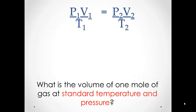Now we know the actual volume of the hydrogen in our container. Our lab is asking us to find the volume of one mole of gas at standard temperature and pressure. Chances are that we are not at standard temperature and pressure when we do the lab, so we need to determine what our measured volume would be if we had done the lab at standard temperature and pressure. We can use the gas laws relationship to convert our measured volume to the volume at standard temperature and pressure.